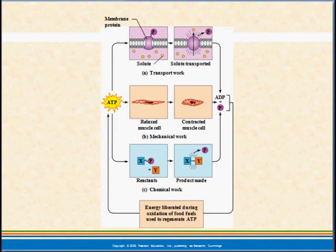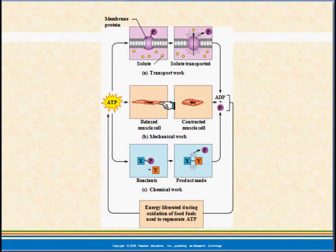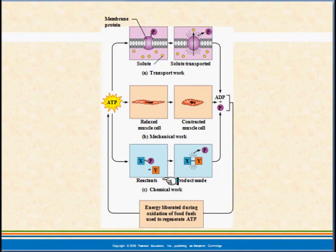We can use ATP for all sorts of things. We can bind ATP to a specific membrane protein, and by binding the ATP, we change the shape of the protein a little bit so that it can open or close — moving and transporting things. We can bind ATP to a structure in muscle, which changes the shape of a component inside the muscle, allowing it to contract. We can also have reactants and cause products to be made. So we get chemical work, mechanical work, transport work — any number of types of work, all from breaking down ATP.